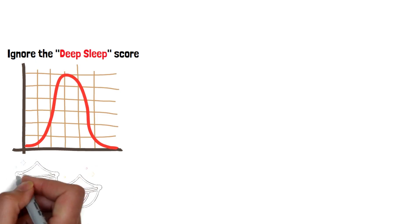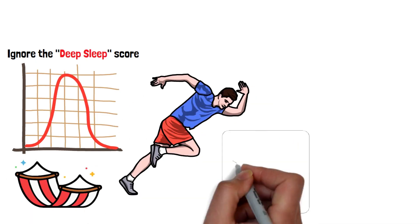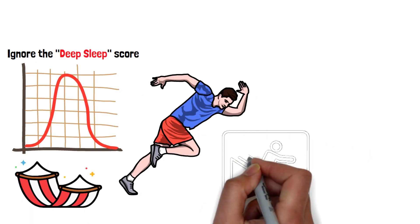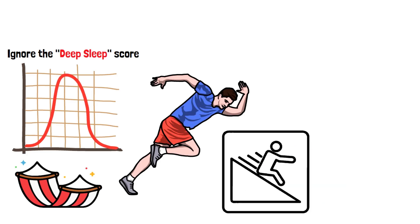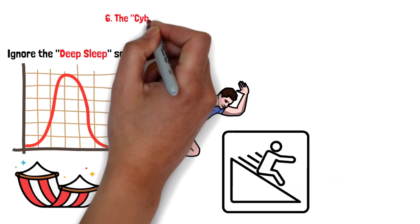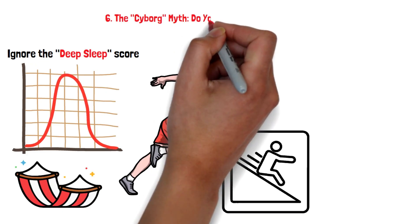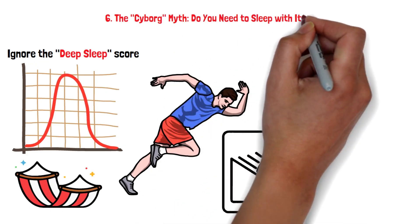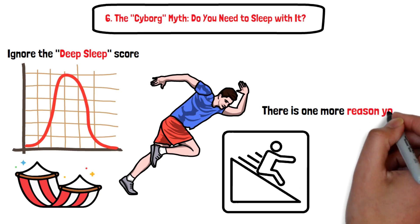Ignore the deep sleep score, look at the curve. If it looks like a hammock—low in the middle—run hard. If it looks like a slide—low only at the end—take it easy.